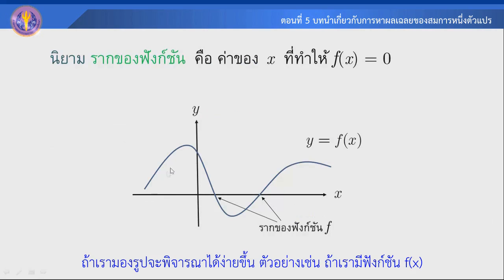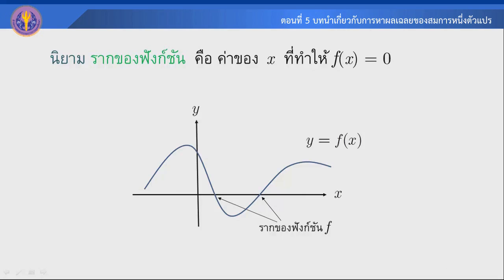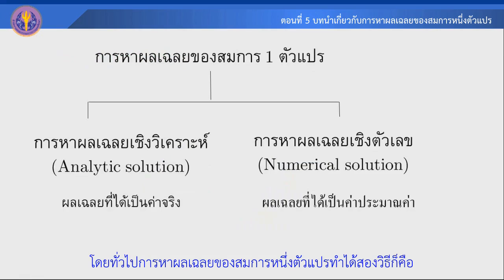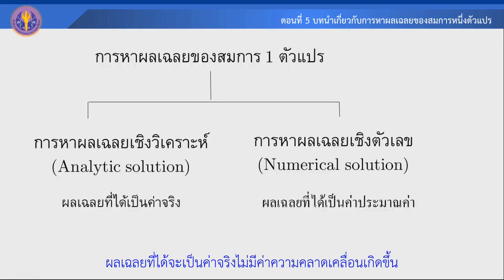ถ้าเรามองรูปจะพิจารณาได้ง่ายขึ้น ตัวอย่างเช่นถ้าเรามี function f(x) ค่าที่ทำให้ f(x) = 0 ก็คือ 2 จุดนี้ แล้วจะกล่าวว่า 2 จุดนี้ก็คือค่ารากของ function f นั่นเองครับ โดยทั่วไปการหาผลเฉลยของสมการ 1 ตัวแปรทำได้ 2 วิธี คือการหาผลเฉลยโดยใช้วิธีวิเคราะห์ ผลเฉลยที่ได้เรียกว่า analytical solution ซึ่งจะเป็นค่าจริง ไม่มีค่าความคลาดเคลื่อนเกิดขึ้น